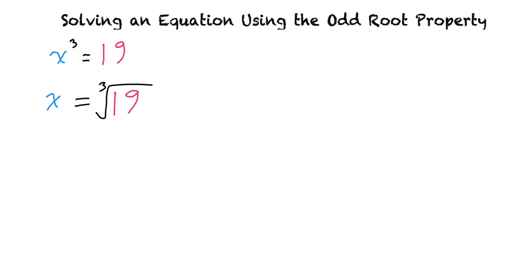Is there anything we can do to simplify this? No, because there are no factors of 19 that are cube numbers. There can be no simplification.